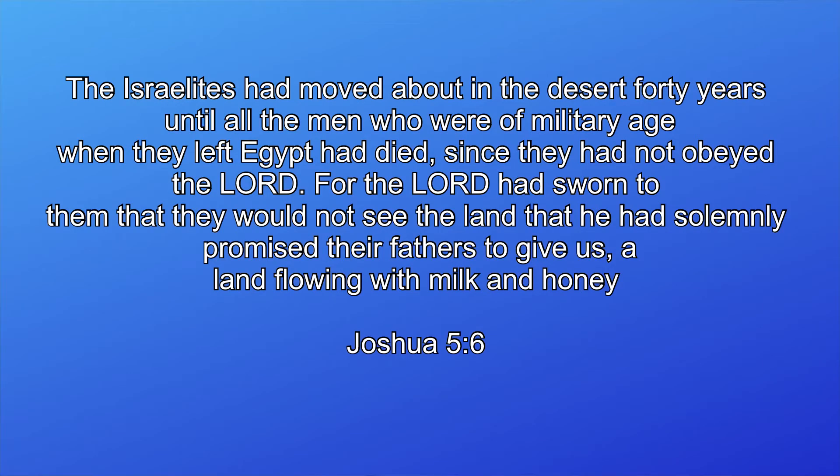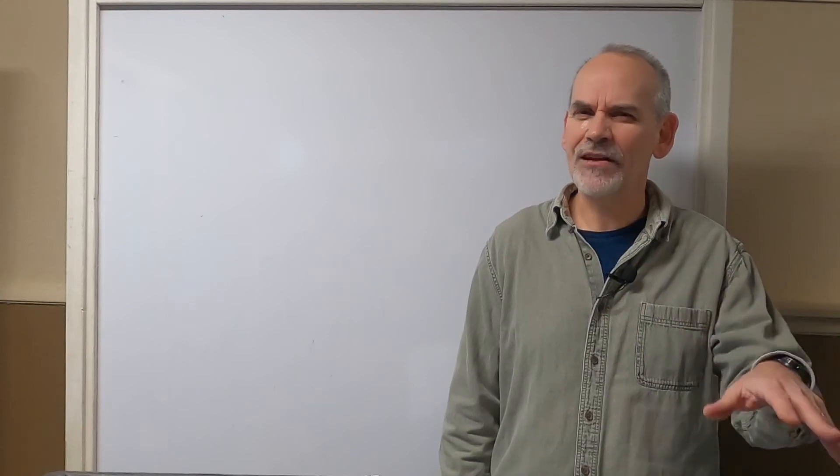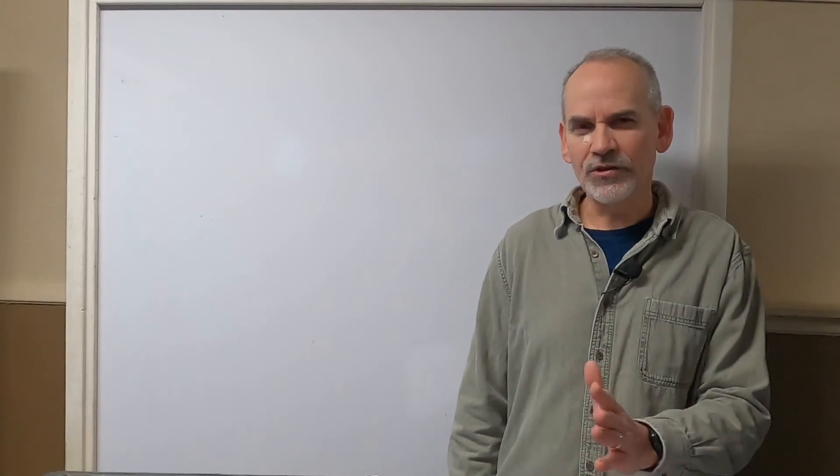Well, the wilderness or the desert is a place of a reminder for Israel's disobedience. Back in Joshua chapter five, verse six, it says the Israelites had moved about in the desert forty years until all men who were of military age when they left Egypt had died since they had not obeyed the Lord. Well, the wilderness here was a place of disobedience, but God sent John into the wilderness is kind of like a fresh start. So the wilderness is becoming a place of redemption as God raised up John to prepare the way for Jesus.